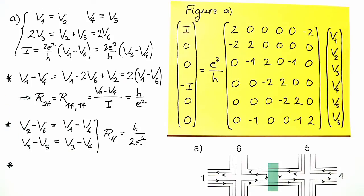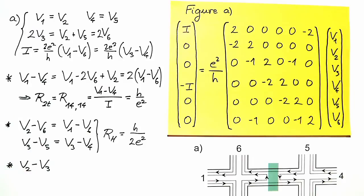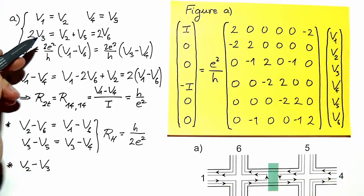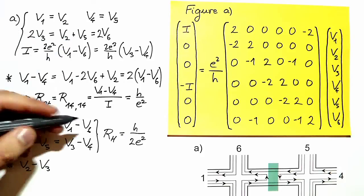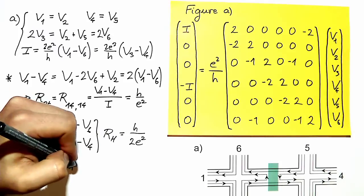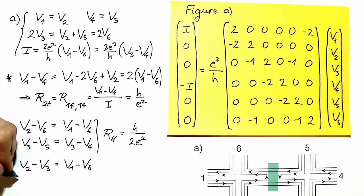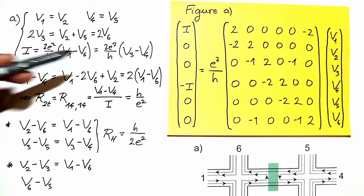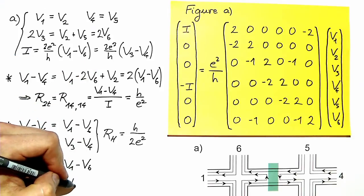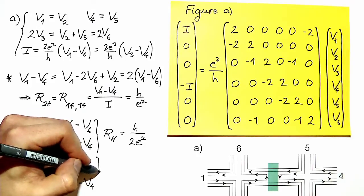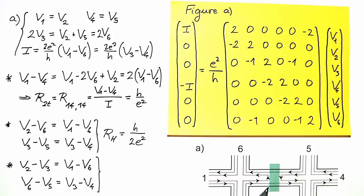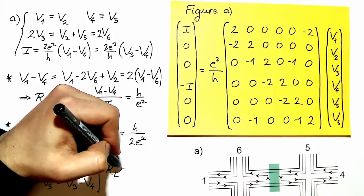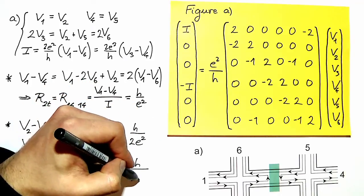For the longitudinal resistances, we consider V2 minus V3: we replace V2 by V1 and note that V3 and V6 are equal, and this quantity is known. Similarly, V6 minus V5: we replace V6 by V3 and V5 by V4. Again, the two longitudinal resistances are the same and equal to h over 2e².